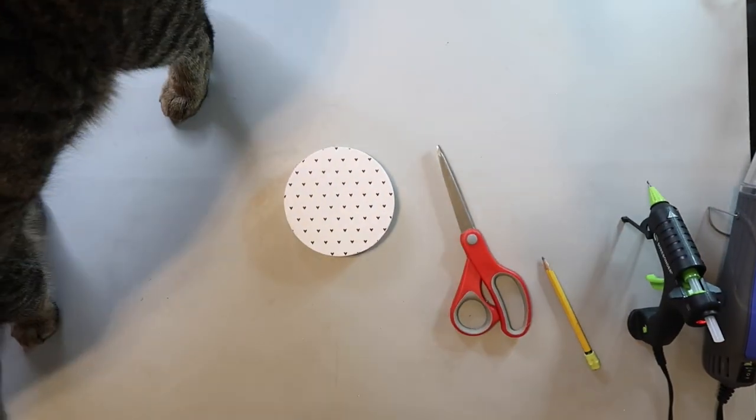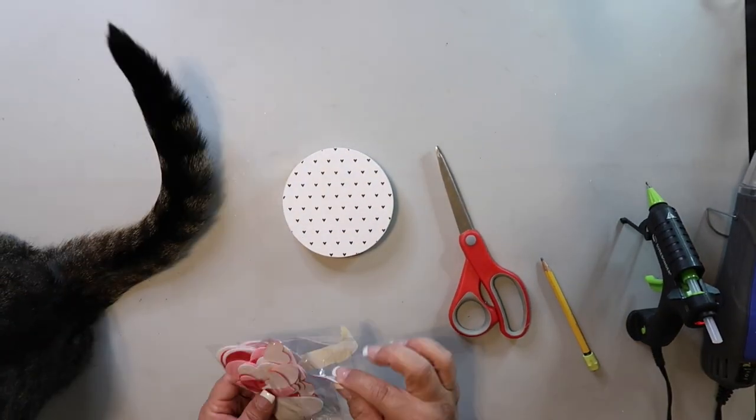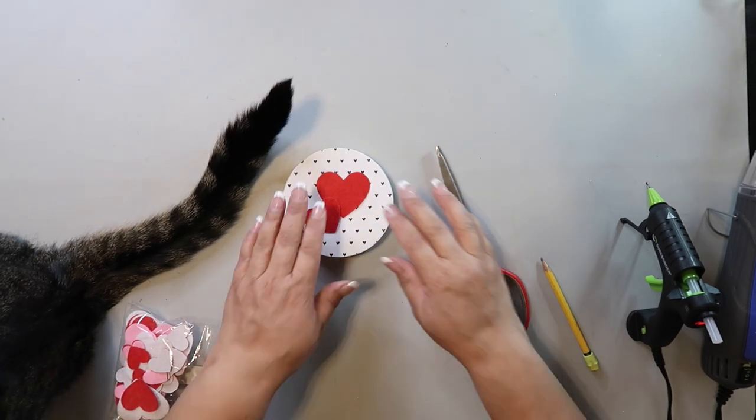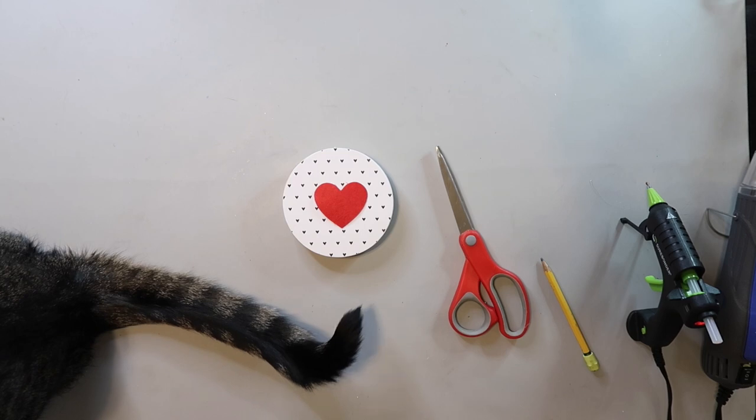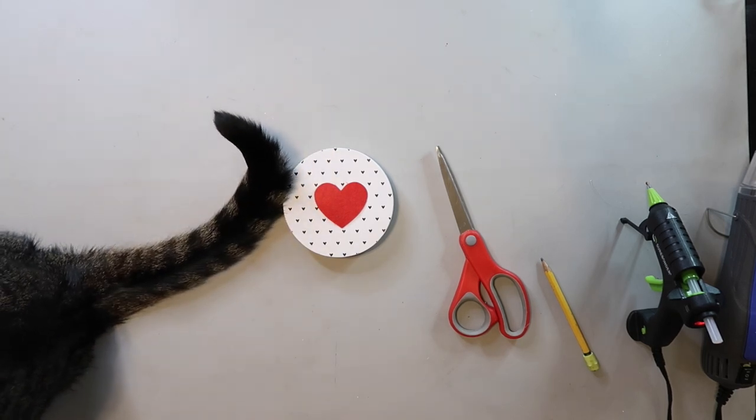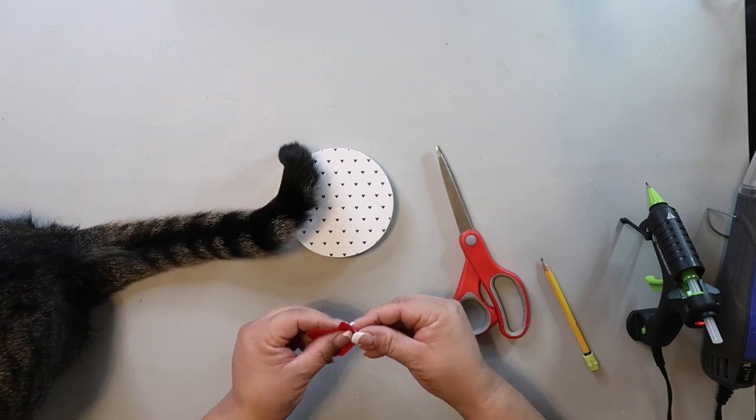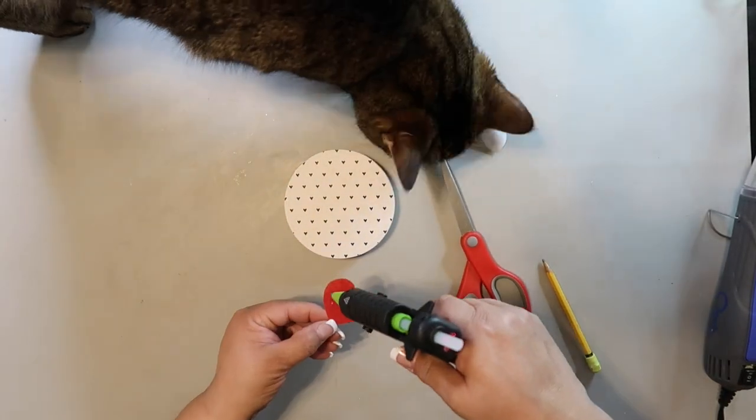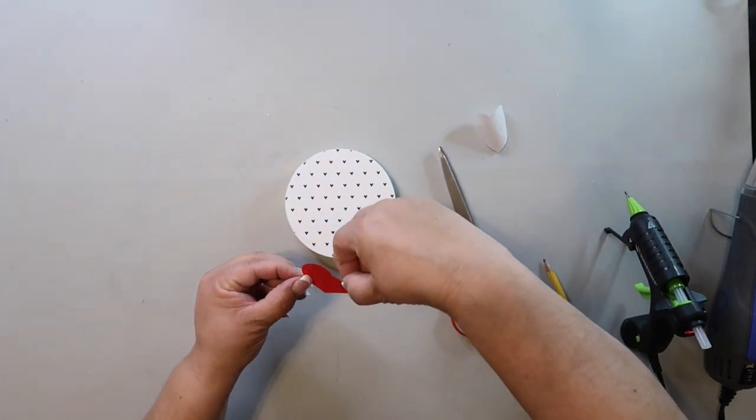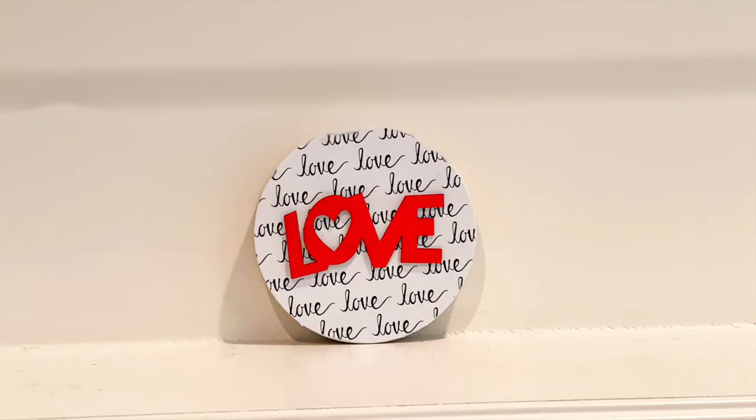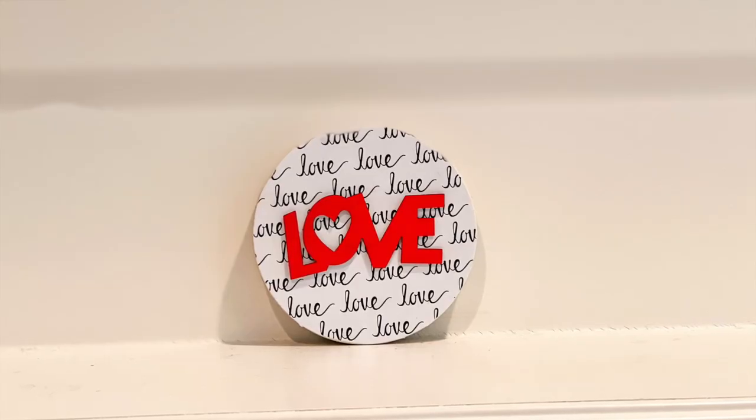I'm not quite done with this wood round because I like double-sided projects. I'm gonna do a second side and we'll call this DIY number one A. I took some more craft paper with little black hearts and repeated the process of applying it to the wood round. I embellished it with a small red felt heart and that was it.